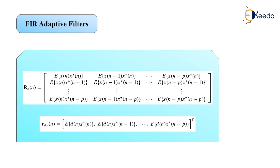For the FIR adaptive filter, we have the vector form R_x(n)·w_n = r_dx(n). If x(n) and d(n) are jointly wide-sense stationary, this reduces to the Wiener-Hopf equations and the coefficient vector w_n becomes independent of time. However, determining these equations for every value of n is not practical in most real-time implementations. Therefore, in the next lecture we extend the FIR adaptive filter design using an iterative approach based on the method of steepest descent.